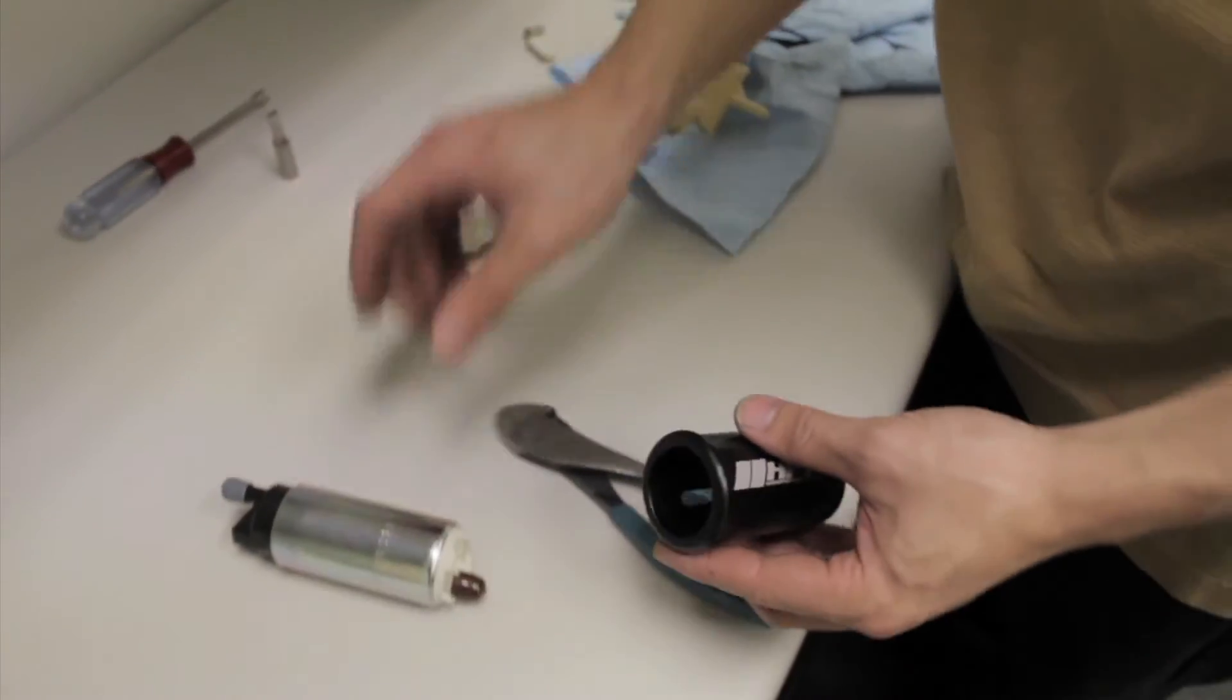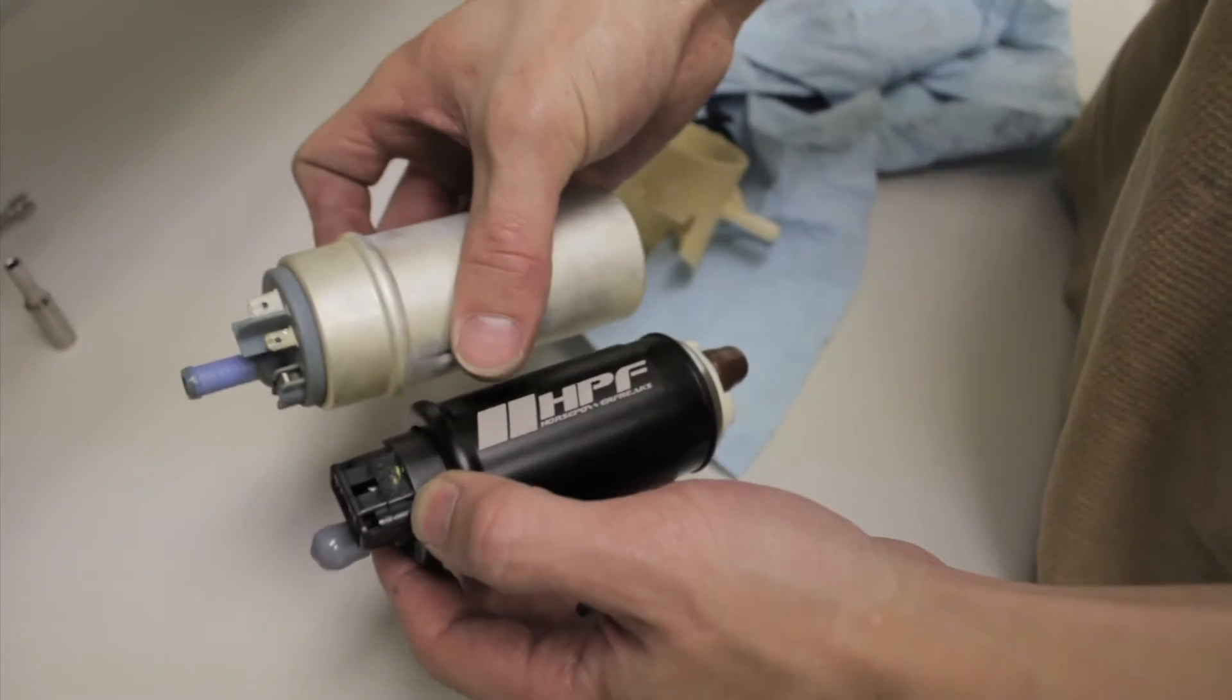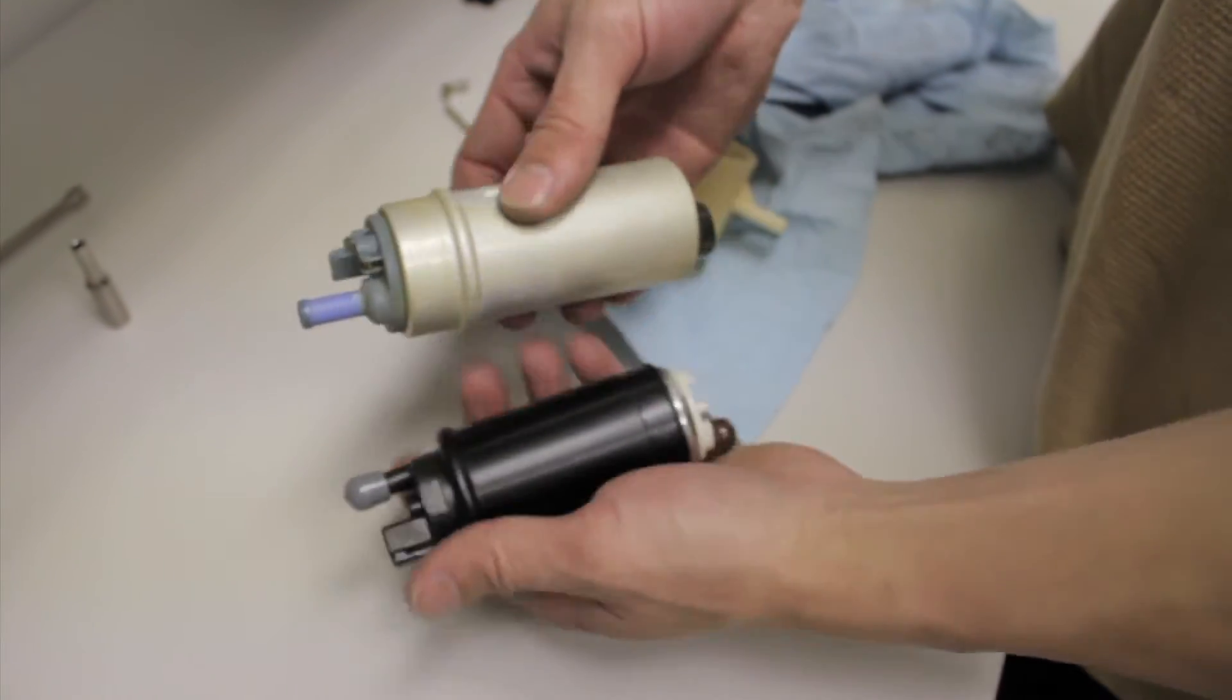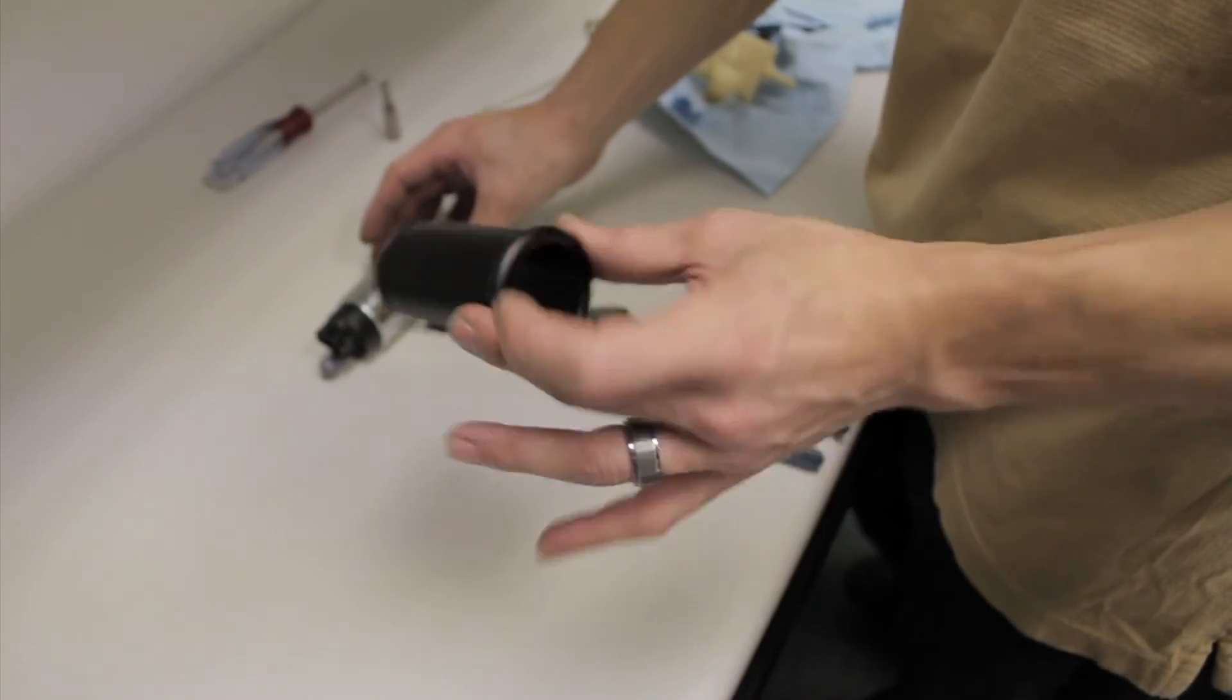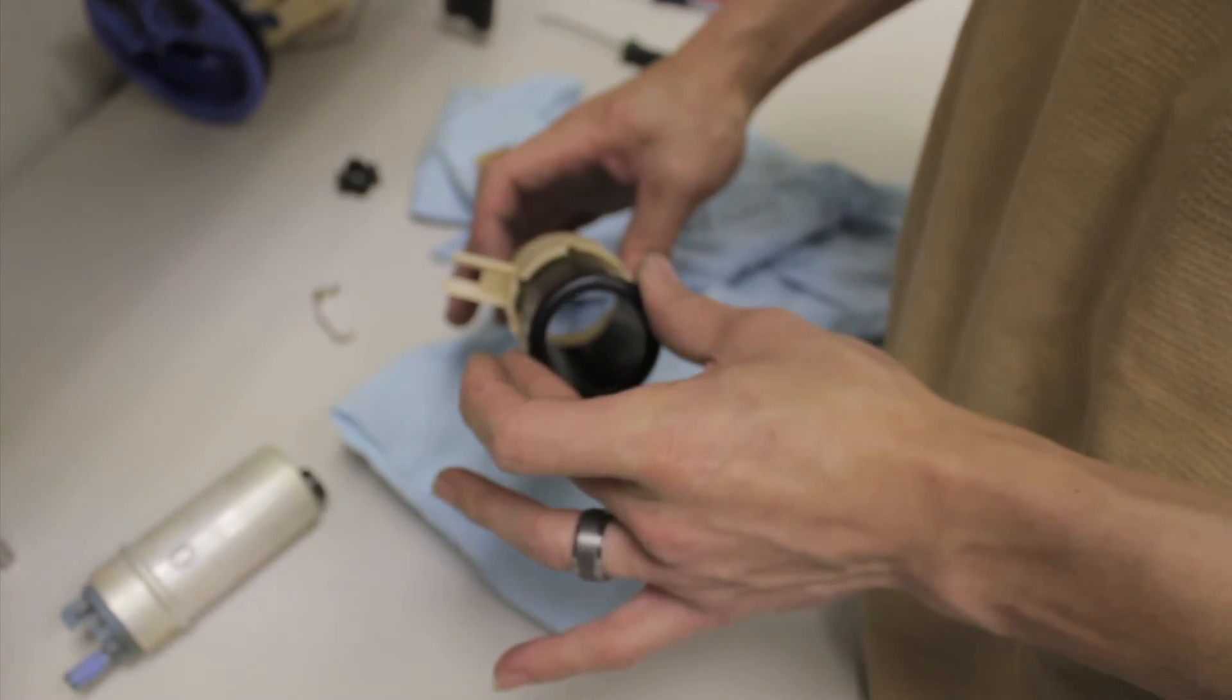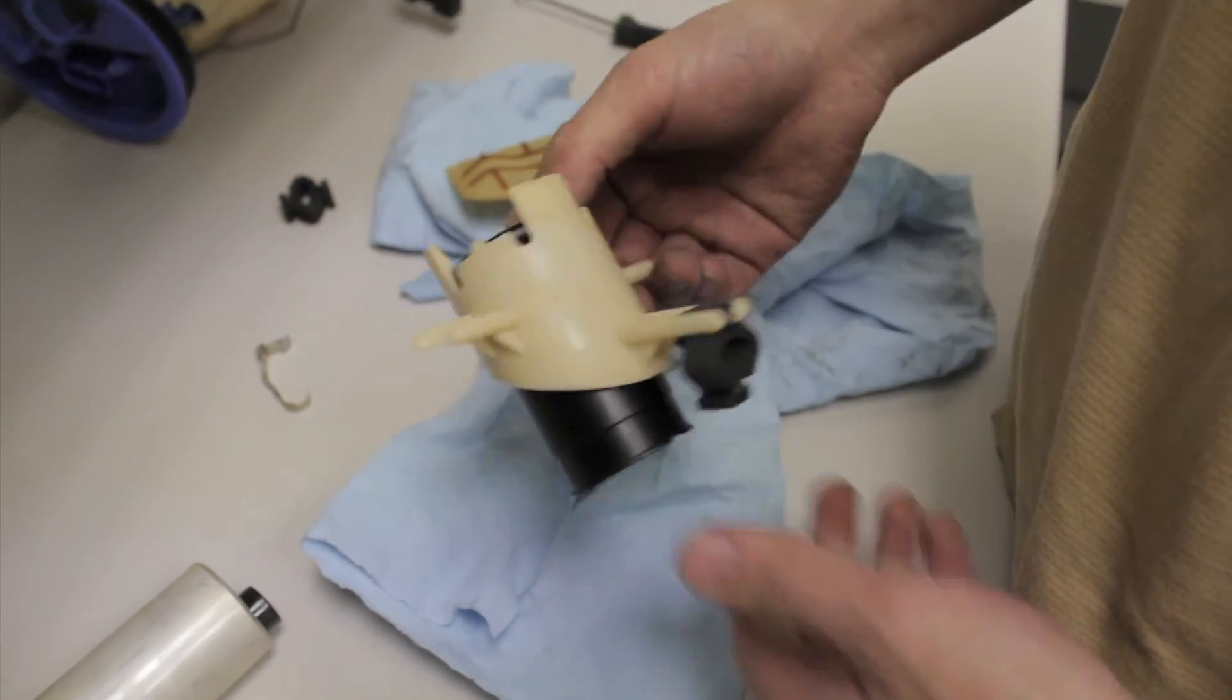So with this pump slid into place, it's pretty much a mimic of the OE pump. So we should have an OE fit. What we want to do now is go ahead and slide this sleeve into the hanger like so. Very simply, slide it downwards, give it a little push, and it should pop right into place. Just like that.